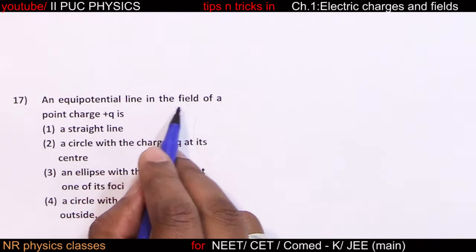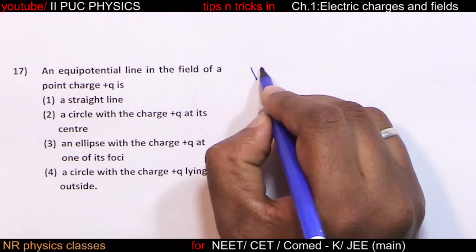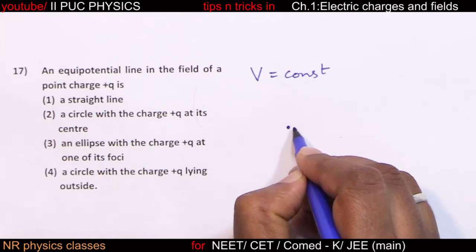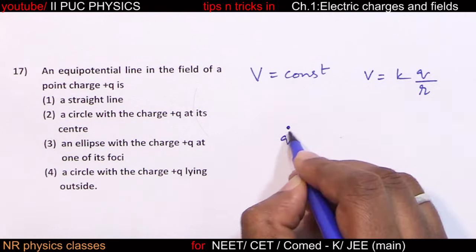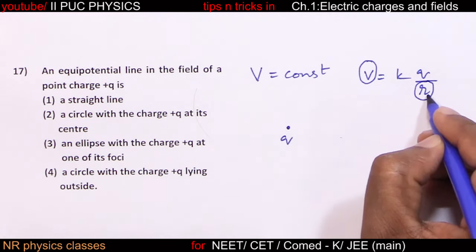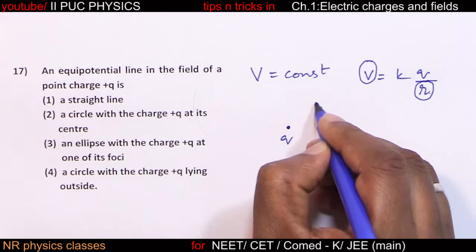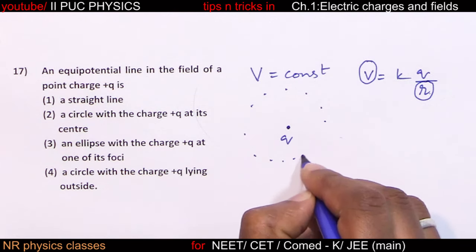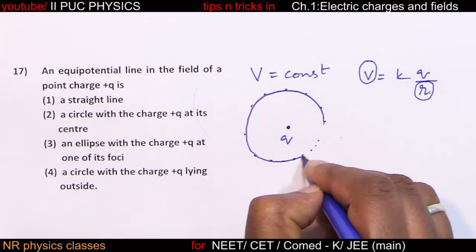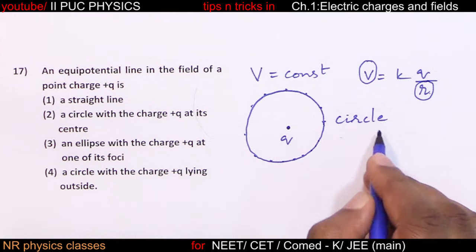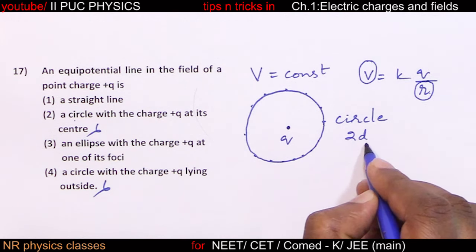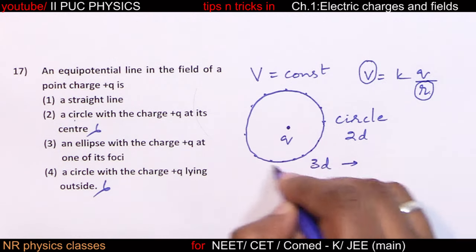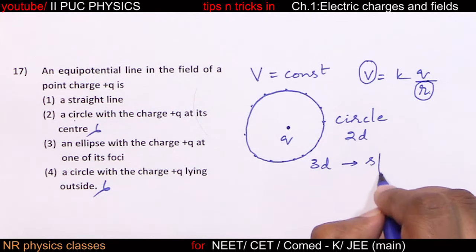An equipotential line in the field of a point charge: potential is constant, V = kQ/r. Since charge is constant, potential depends only on distance r. Equidistant points from a point charge form a circle. So in 2D, the equipotential line is a circle with charge at the center. In 3D, the equipotential surface is spherical.